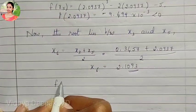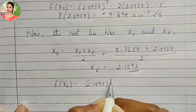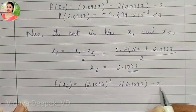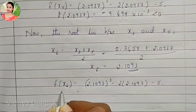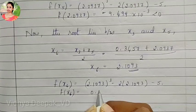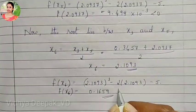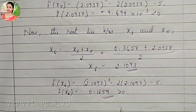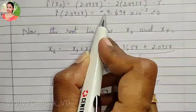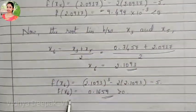Now we find f of x6: 2.1093 cube minus 2 into 2.1093 minus 5, giving f of x6 equal to 0.1659, which is greater than 0. So we check the previous negative, which is f of x5. That means the root lies between x5 and x6.